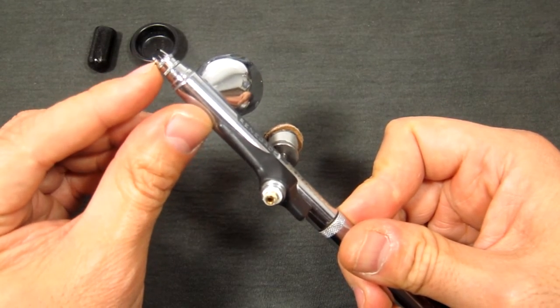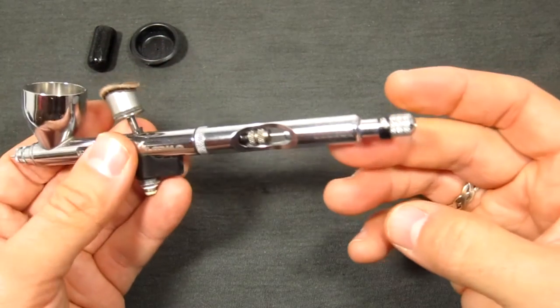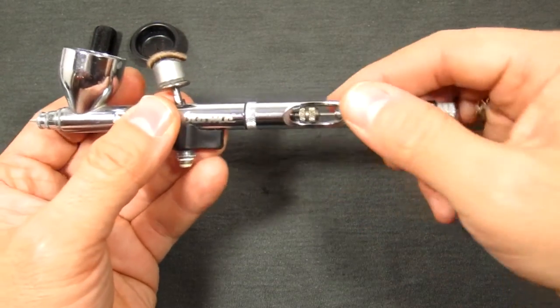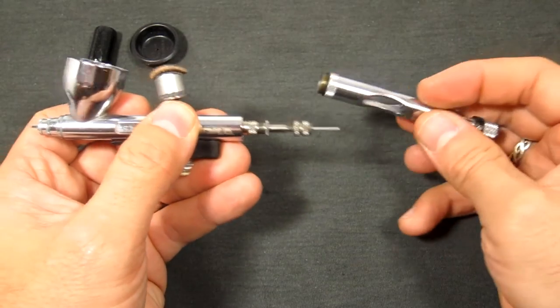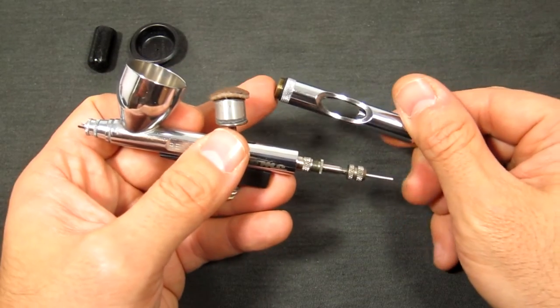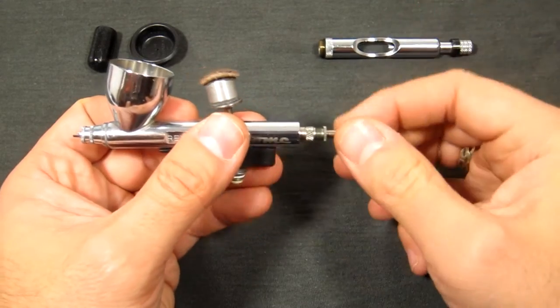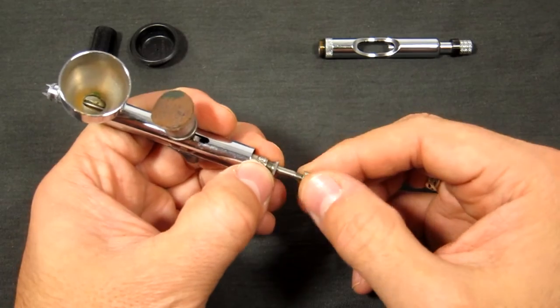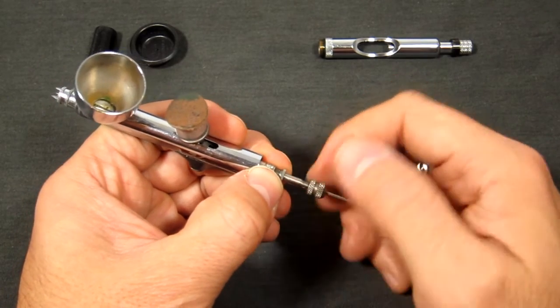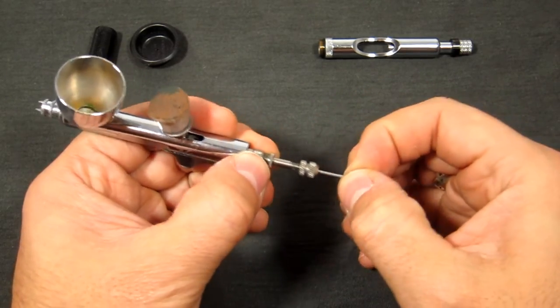Okay, now the back end is held on very easily—everything is finger tight on Badger airbrushes so it's very handy—and then we're going to hold on to this trigger assembly here and loosen the needle chuck.